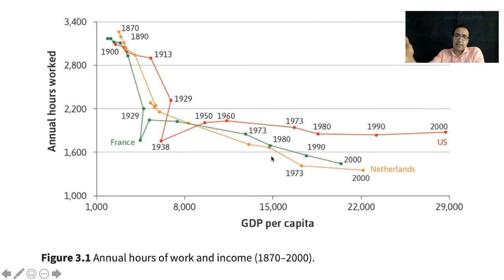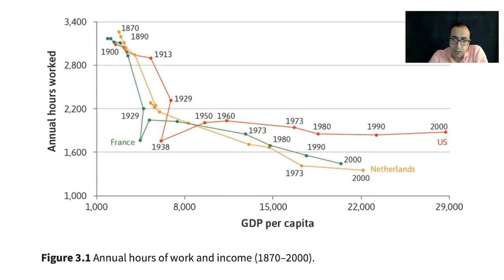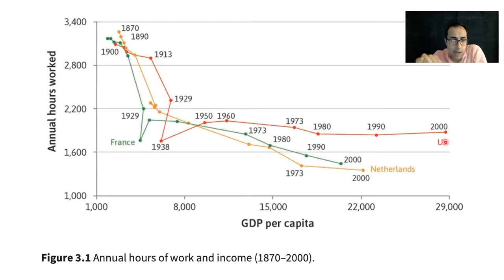In the end, let me leave you with an interesting question. So far we talked about Netherlands, but if we look at the graph, we see an interesting outlier — the US. Wages have been growing since 1960, but the total hours of work have remained almost the same. Why? To answer that question, you need to go back to the core textbook. Thank you.